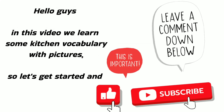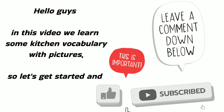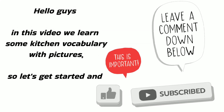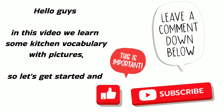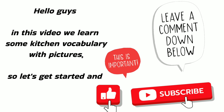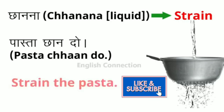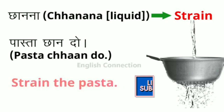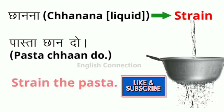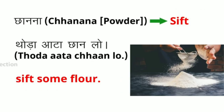Hello guys, in this video we learn some kitchen vocabulary with pictures. Let's get started. The first word is 'strain' and the sentence is: strain the pasta. The word 'strain' is used for liquid things, and for dry things we use the next word.